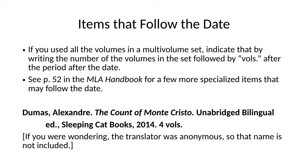If you used all the volumes in a multi-volume set, indicate that by writing the number of the volumes in the set followed by vols, the abbreviation for volumes, after the period after the date. Also notice in your MLA Handbook, page 52 has some other specialized items that may follow the date. Here's a version of the Count of Monte Cristo published in four volumes — it's the unabridged bilingual edition, and you would want to include that information.